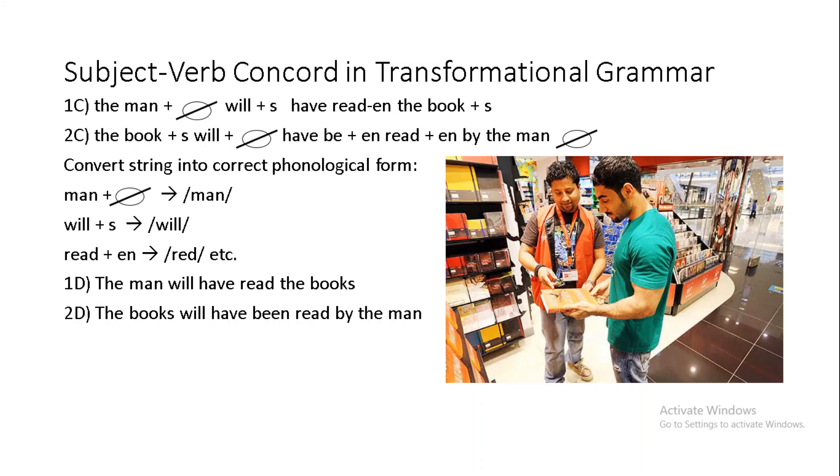Finally, if we apply the lexical substitution rules and then the rules to convert string subscript X into the correct phonological form, that is the form that's actually pronounced by the speaker, have a transformation of, in 1c, the man plus void, will plus s, have read plus en, the book plus s, converted to the books will have been read by the man, which will then be converted from man plus void to man, will plus s to will, read-en to read as it is in irregular past tense, and then we will get the clear transformation from the man will have read the books to the books will have been read by the man.